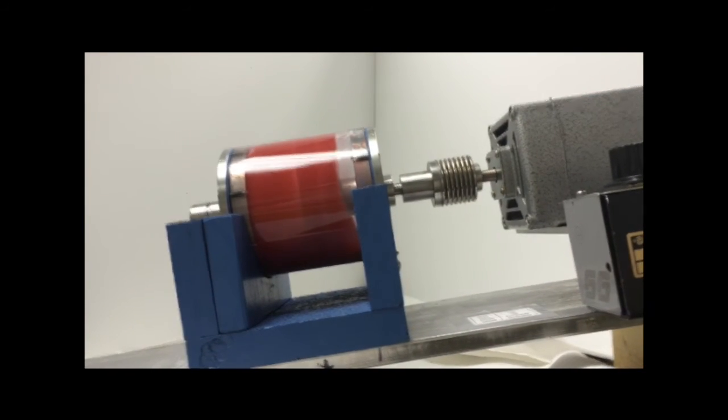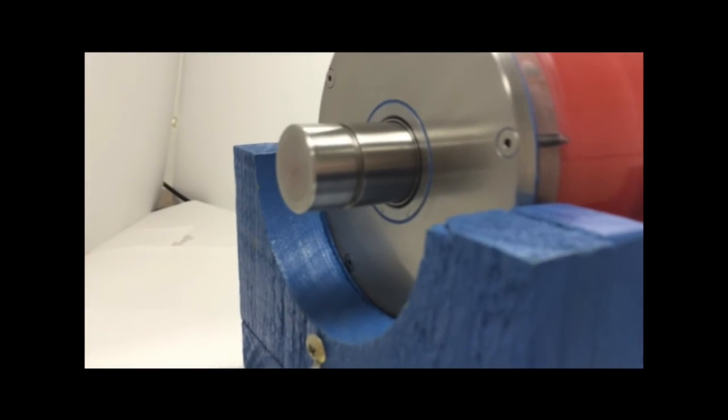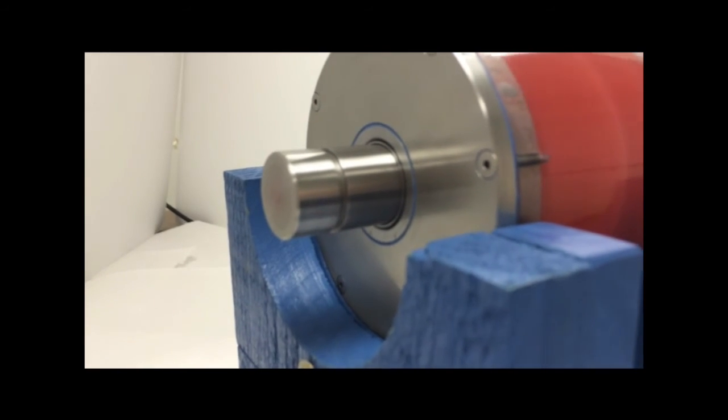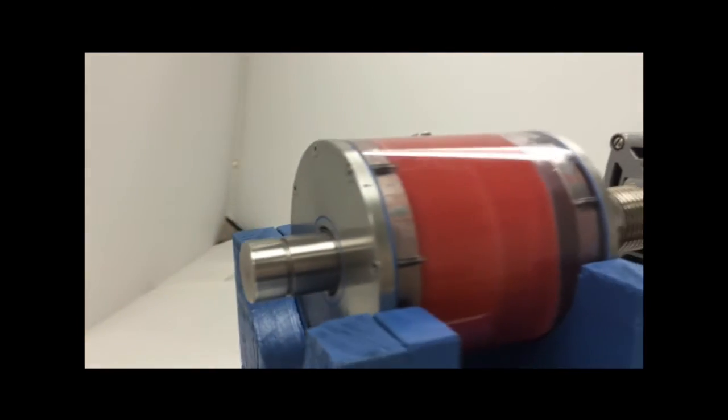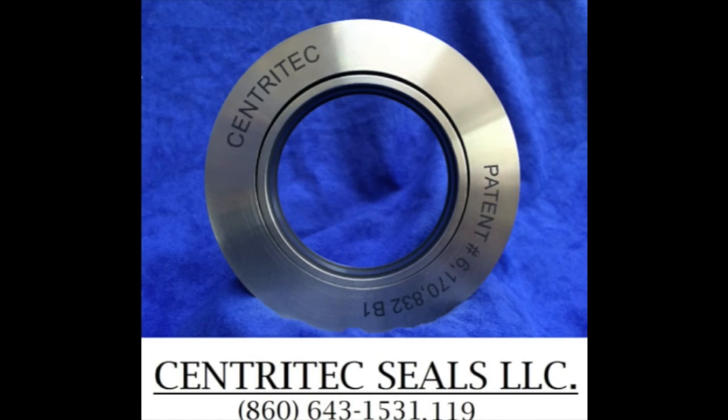With the shaft rotating at 1200 RPM, the centrifugal pressure generated by the seal will prevent any leakage. The Centrotec seal technology works as no other non-contact seal can on vertical shafts.